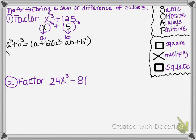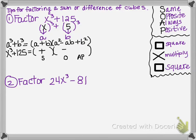We had x cubed plus 125. Remember that you have a binomial and a trinomial. First, let's fill in the signs — that's where SOAP comes from. The first sign is going to be the same. The next sign is going to be opposite, but the last sign is always positive. Since we started with a sum, the first sign is a plus. The next sign is opposite, so it's a minus. The 'always positive' means you always end with a positive, whether you have a sum or a difference of cubes.